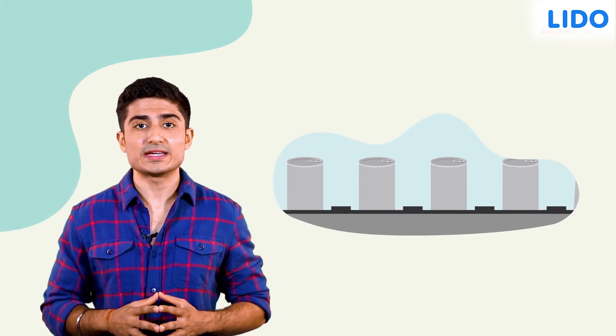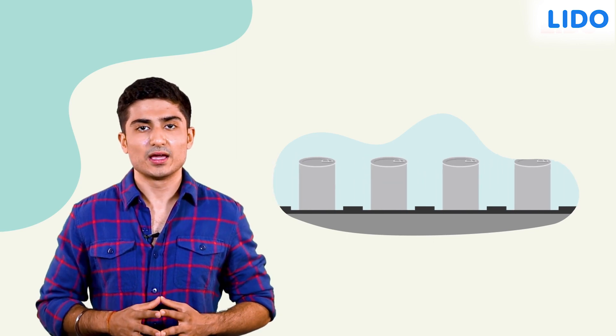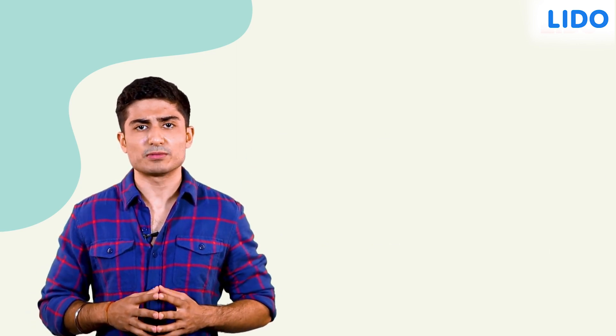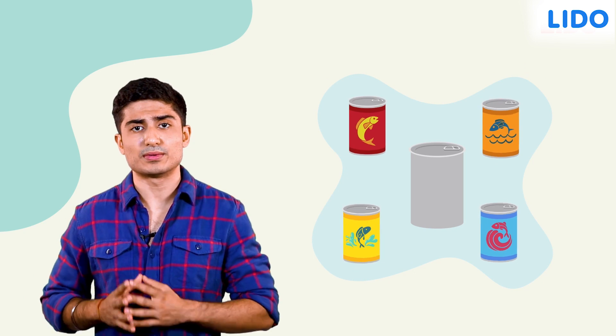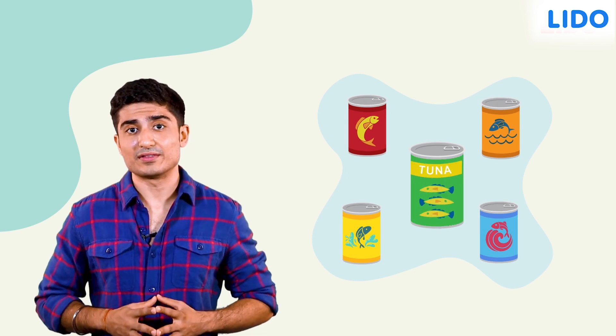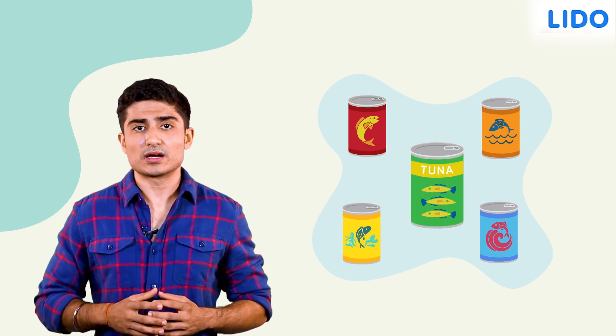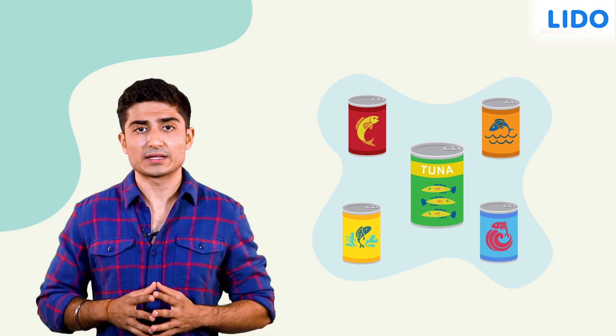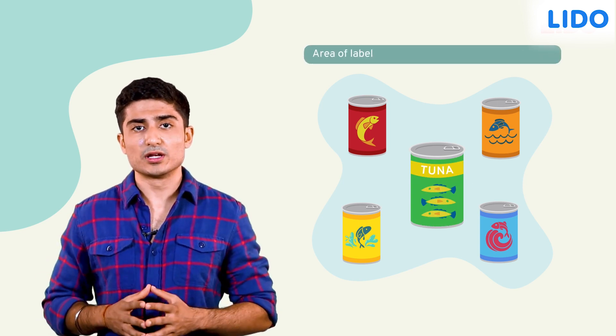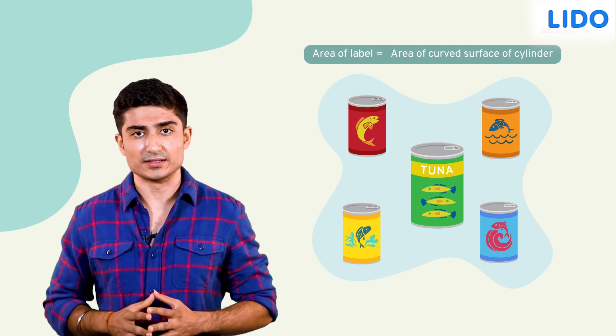Excellent! We are now ready to manufacture the cylindrical can. But how will the customers differentiate between my company's tuna and the other brands in the market? I need to have a label. The label will cover only the curved surface area of the can. So, the area of the label will be equal to the area of the curved surface of the cylinder.